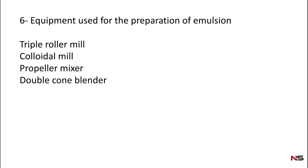Question number six for pharmaceutics: Which equipment is used for the preparation of emulsion? Options: triple roller mill, colloidal mill, propeller mixer, double cone blender. The correct answer is colloidal mill.